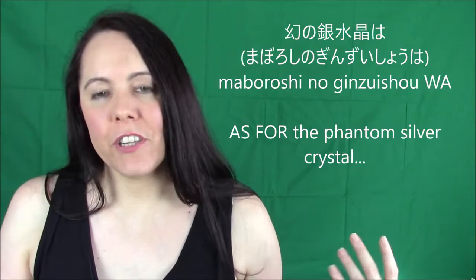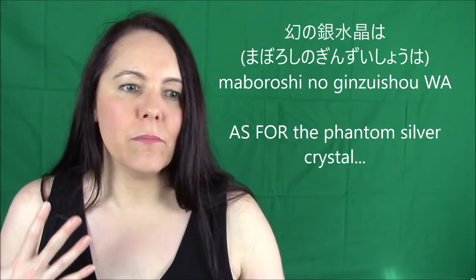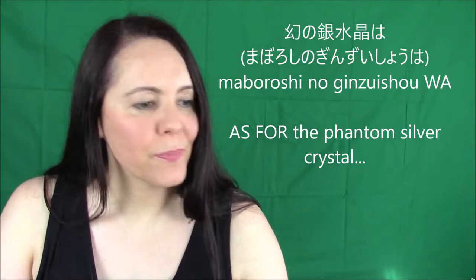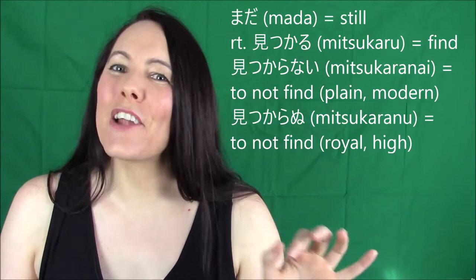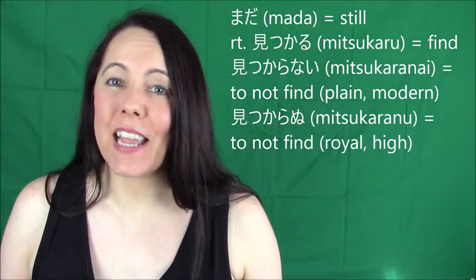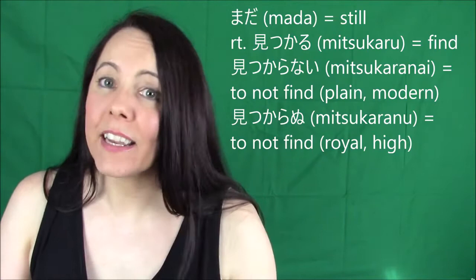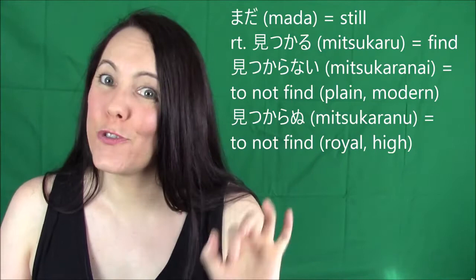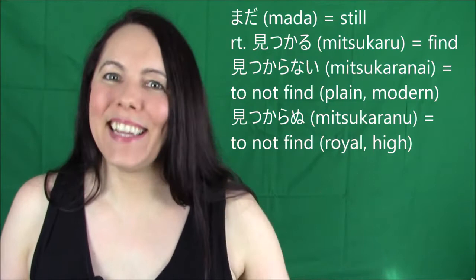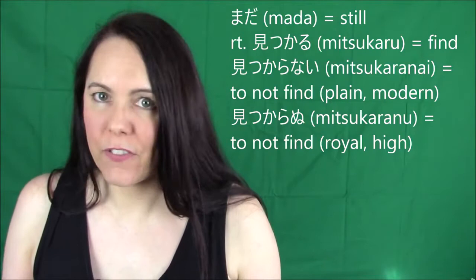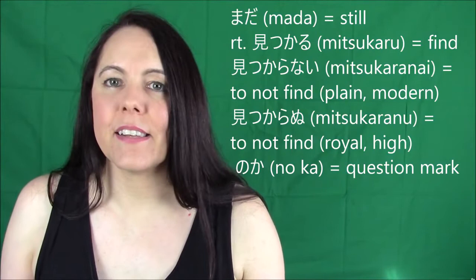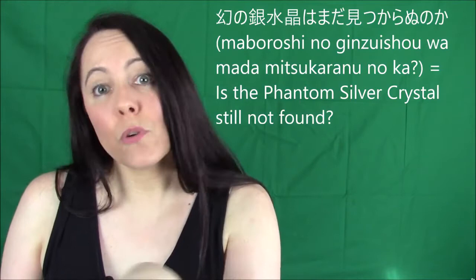You add 'wa' after 'Maboroshi no Ginzuisho.' The 'wa' is basically the particle that notes what we're going to talk about — 'as for the silver crystal.' Then 'mada' means 'still,' and 'mitsukaranu' is the old-timey Shakespearean villain way of saying 'mitsukaranai.' 'Mitsukaru' means to find something, to locate something that was lost. Change the 'ru' to 'nai' and it becomes the negative. Then changing 'nai' to 'nu' is the villain or royalty way. So 'mada mitsukaranu' means 'still not found.' The 'no ka' at the end is a question marker — 'as for the silver crystal, still not found?' Notice there are no pronouns.